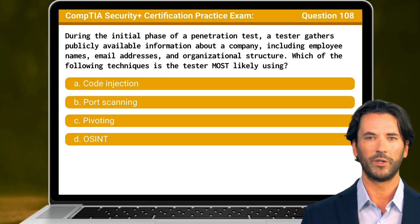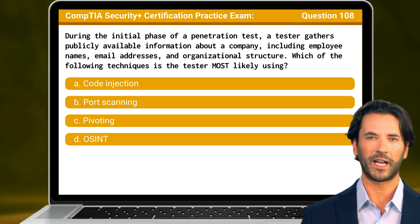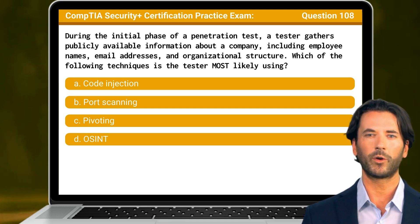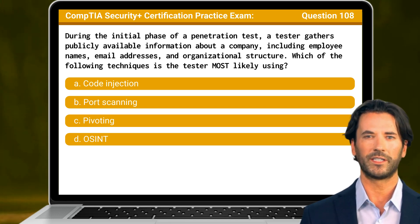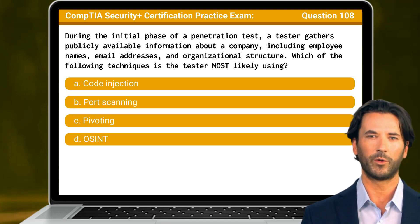Question 108. During the initial phase of a penetration test, a tester gathers publicly available information about a company, including employee names, email addresses, and organizational structure. Which of the following techniques is the tester most likely using?